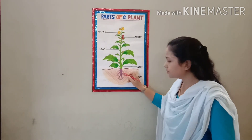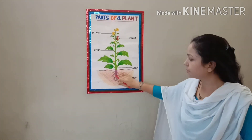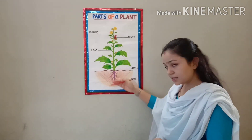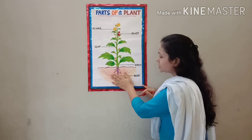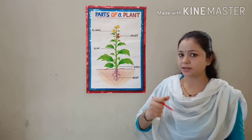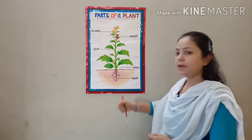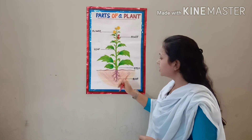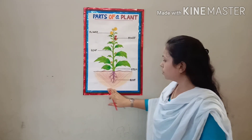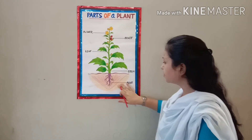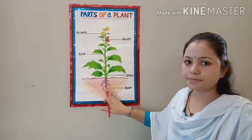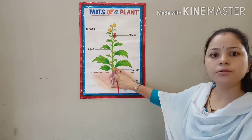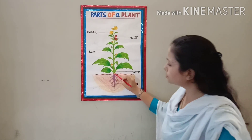This is root. Root grows under the ground. Root holds the plant in the soil. Root absorbs water and minerals from the soil and gives it to the stem.